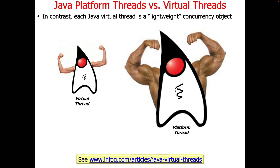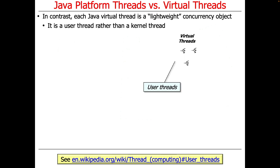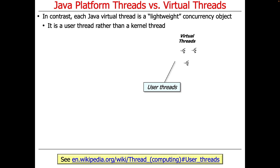In contrast, Java 19 also defines something called a virtual thread, which is a lightweight concurrency object. You can think visually of the platform thread as this big steroid-pumped-up muscle thing, and the virtual thread is like the scrawny little younger kid. Being scrawny is an advantage in this context. A virtual thread is a so-called user thread rather than a kernel thread, so you can have a whole bunch of Java virtual threads running at user level instead of kernel space. It's scheduled by the Java execution environment rather than the underlying operating system.